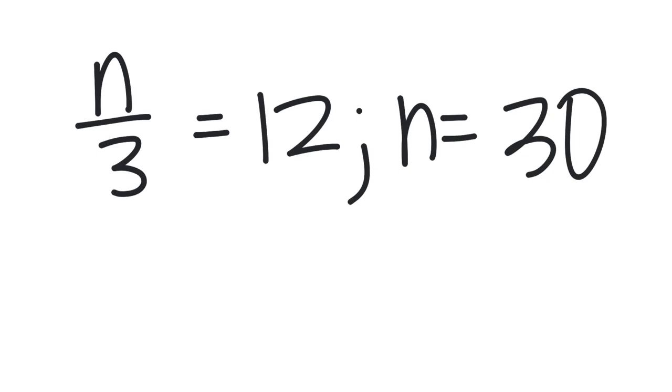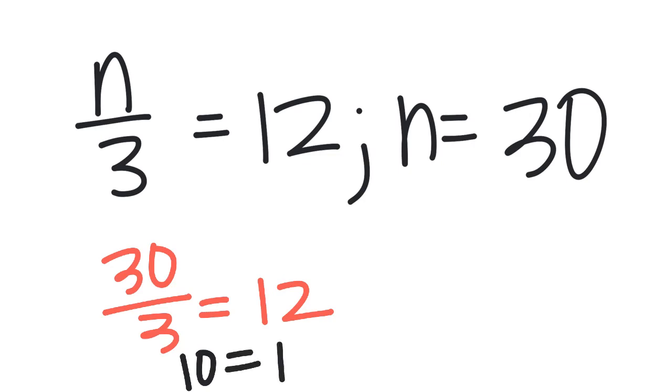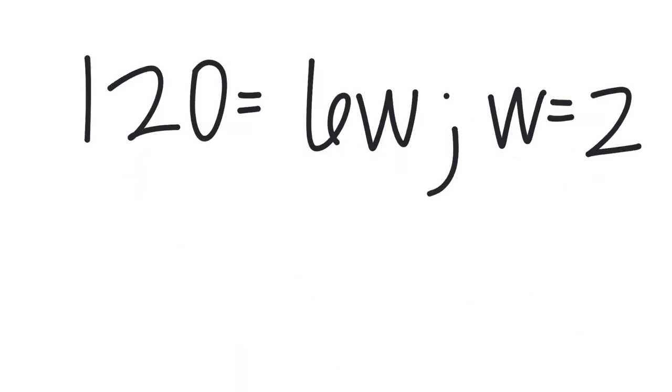Next one, N divided by 3 or N over 3 is equal to 12. N equals 30. So I'm going to rewrite this 30 over 3 equals 12. Well, when I look at this 30 divided by 3, I know the answer to that is 10. So 10 equals 12, no, not a solution, does not work.